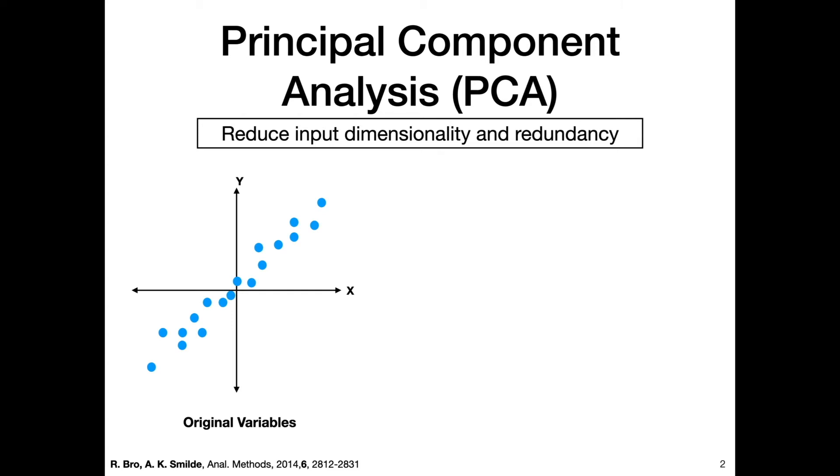A bit more concretely, principal component analysis reduces input dimensionality and redundancy. We can think of two variables x and y—this could be something like hot dogs sold and hot dog buns sold, which are directly correlated but in a lot of ways contain redundant information.